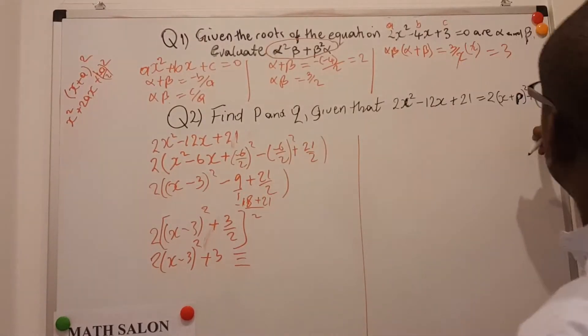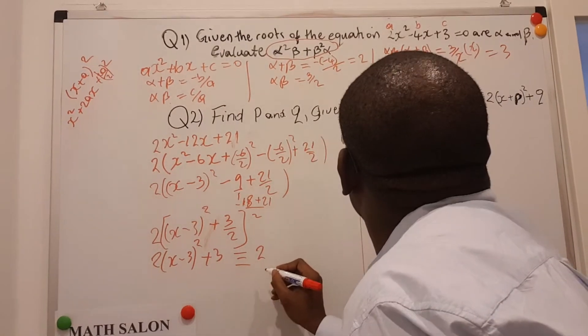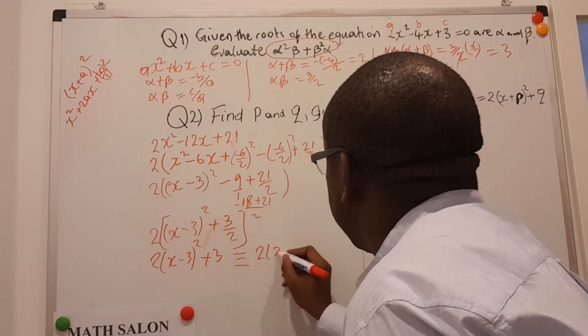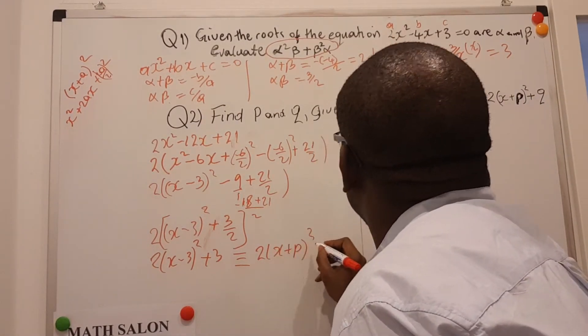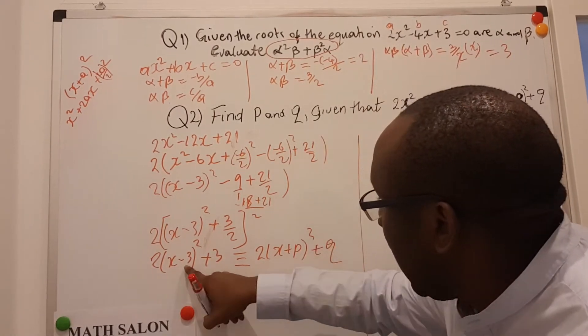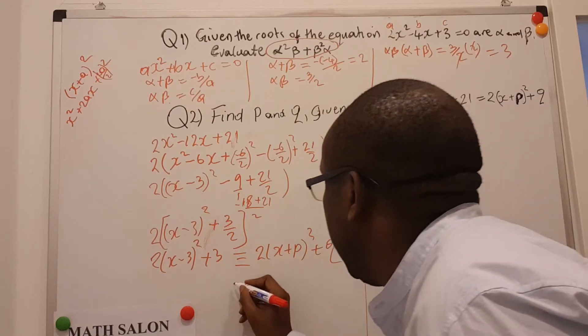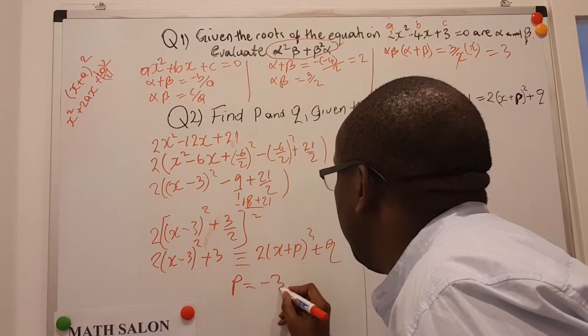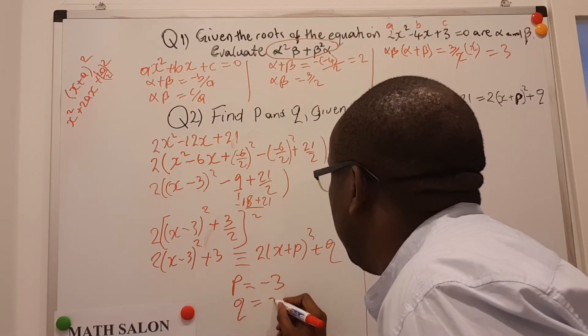And if I try to relate it to the right hand side, that this is equal to 2 into x plus p, all that squared, plus q, then I can read out p as minus 3, and q as 3. Then p is equal to minus 3, and q is equal to 3.